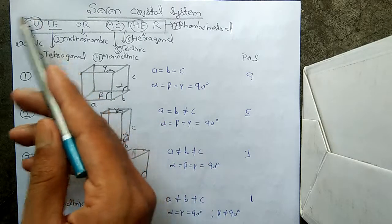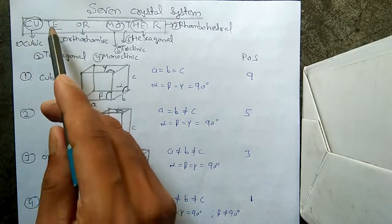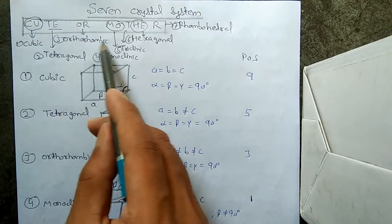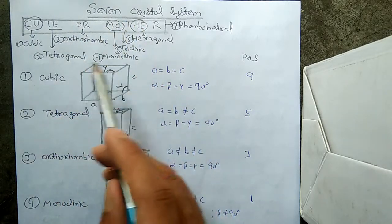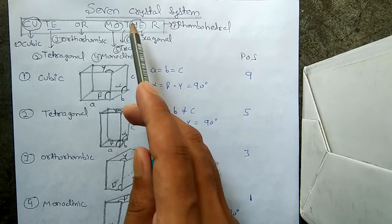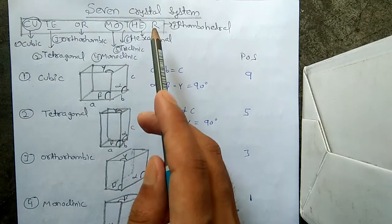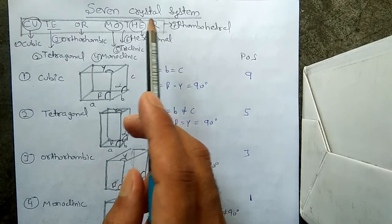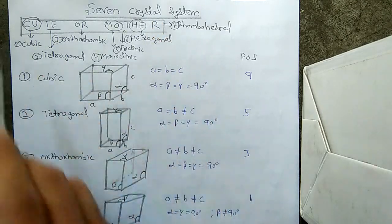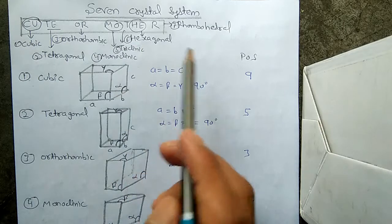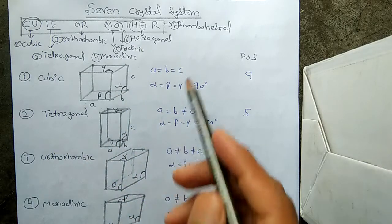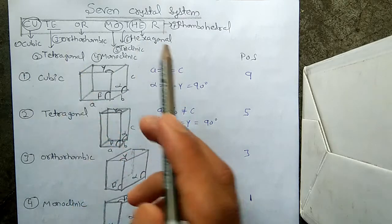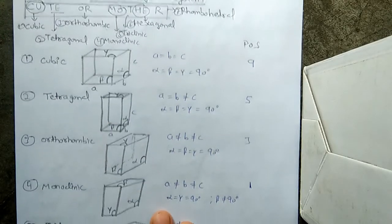CU represents Cubic, TE represents Tetragonal, OR represents Orthorhombic, MO represents Monoclinic, T represents Triclinic, HE represents Hexagonal, and the last one R represents Rhombohedral. By this method we can easily remember the names of these seven crystal systems.